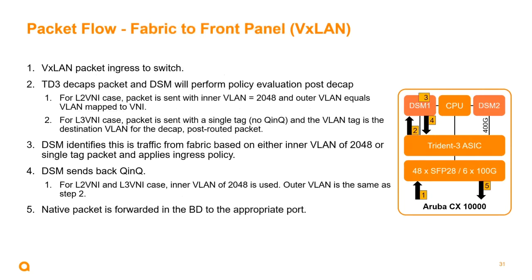Looking at a fabric-to-front-panel-port workflow — from spine switches to front panel ports — a VXLAN packet ingresses the switch. The Trident 3 decapsulates that packet and the distributed services module performs a policy evaluation on the decapsulated packet. For a layer 2 VNI case, the packet is sent with inner VLAN 2048 and outer VLAN mapped to that VNI. For a layer 3 VNI case, the packet is sent with just a single tag — that VLAN tag is the destination VLAN for the post-routed packet. The DSM identifies this as fabric traffic and applies an ingress policy.